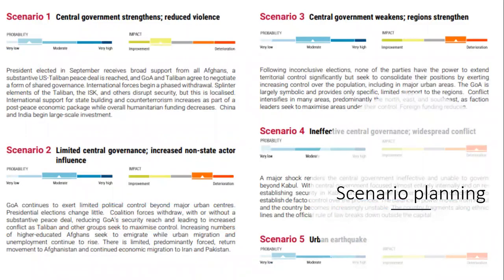And then scenario planning — this isn't the whole document, it's a bigger document of five or six pages, but the core component is four or five scenarios with their probability, their impact, and a short description of what that scenario means. This is the really interesting stuff — you can do a lot with your secondary data review to create that scenario or forecasting output, which is less touched on at the minute but could be an area of growth for secondary data review.